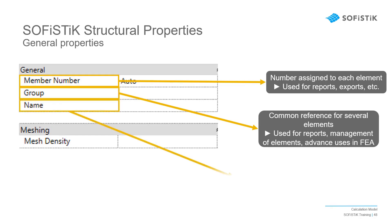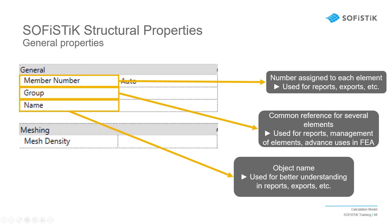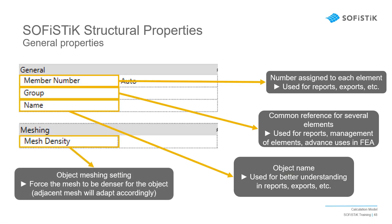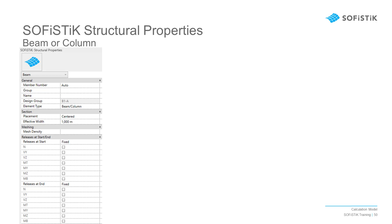A name can be provided for better reference and understanding in reports that will no longer be within the graphical 3D model. Since we are working with finite element technology, meshing parameters are available for all analytical members. If no new input is made, the general meshing options will be used.